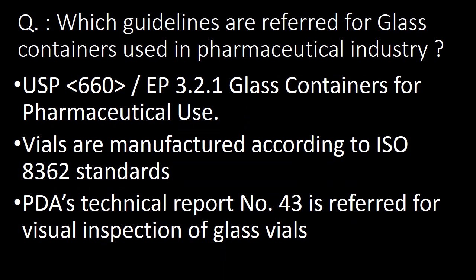Next very important question: which guidelines are referred to for glass containers used in the pharmaceutical industry? USP chapter 660 is referred to for glass containers. Vials are manufactured according to ISO 8362 standards, and PDA Technical Report Number 43 is referred to for visual inspection of glass vials.